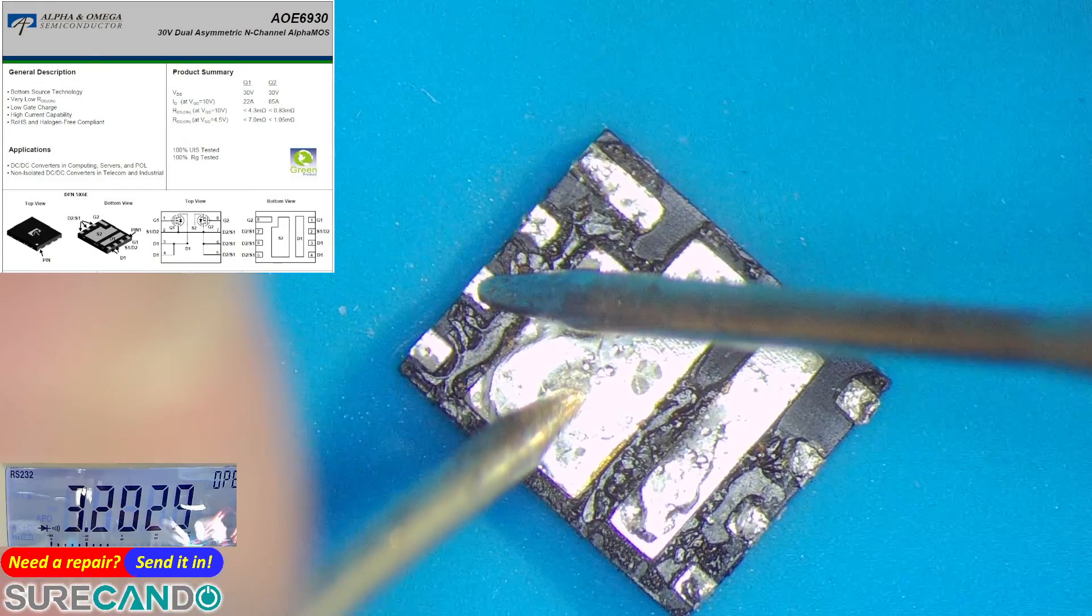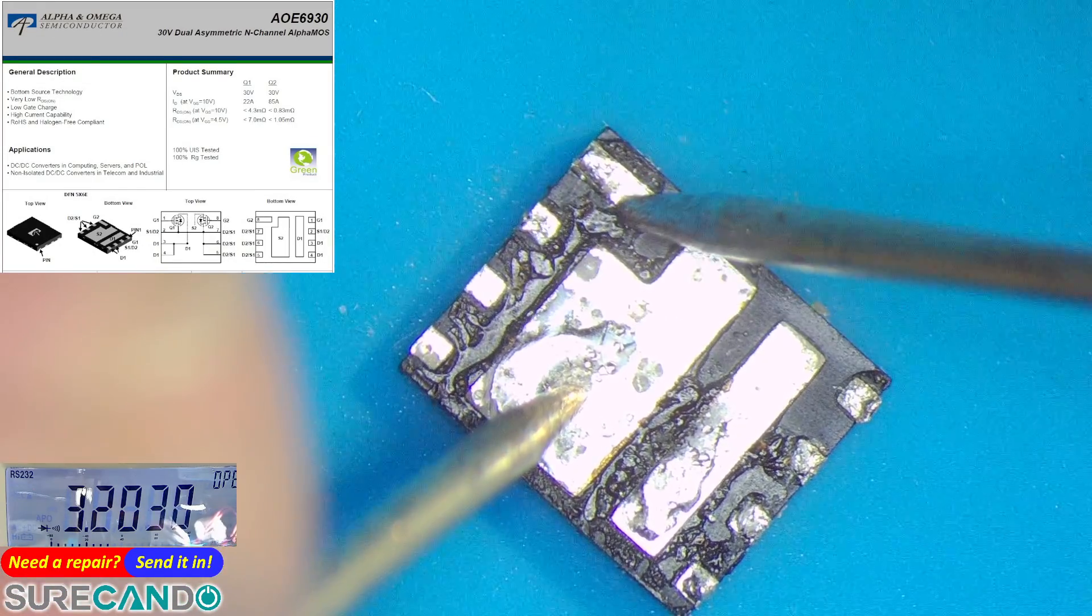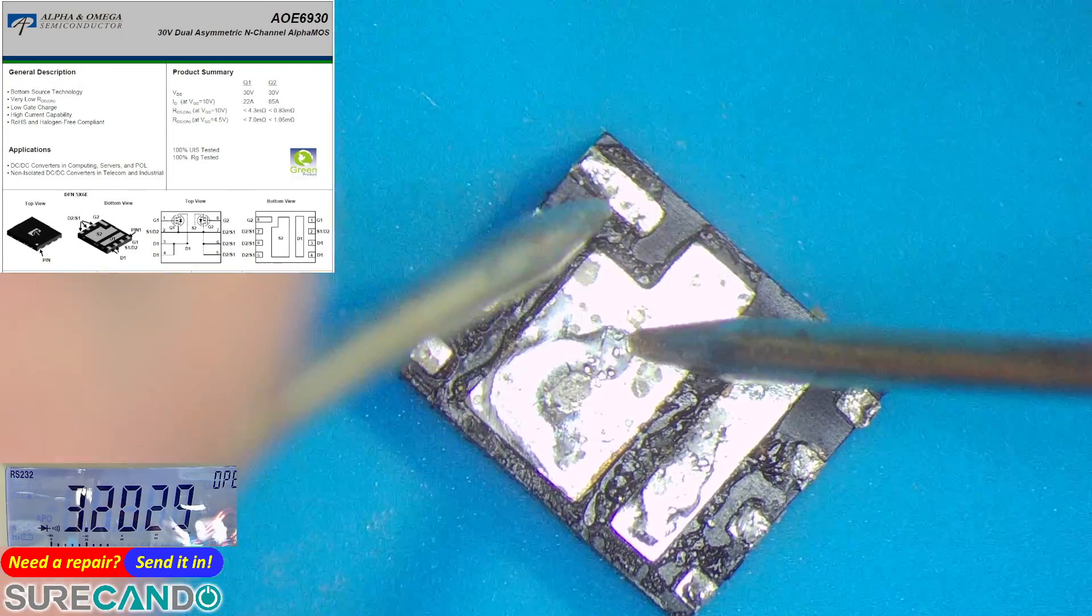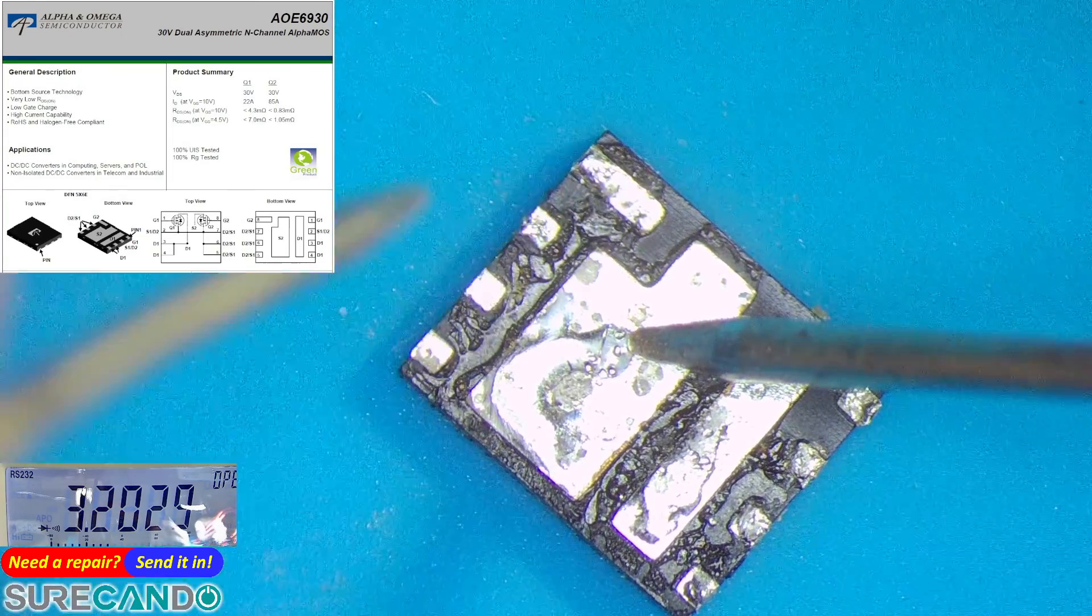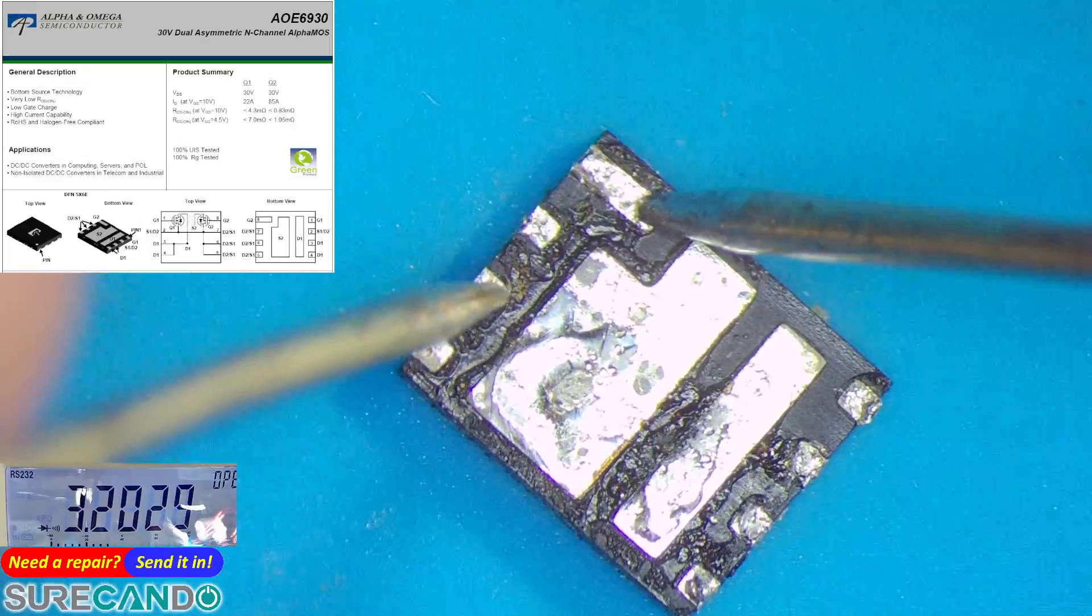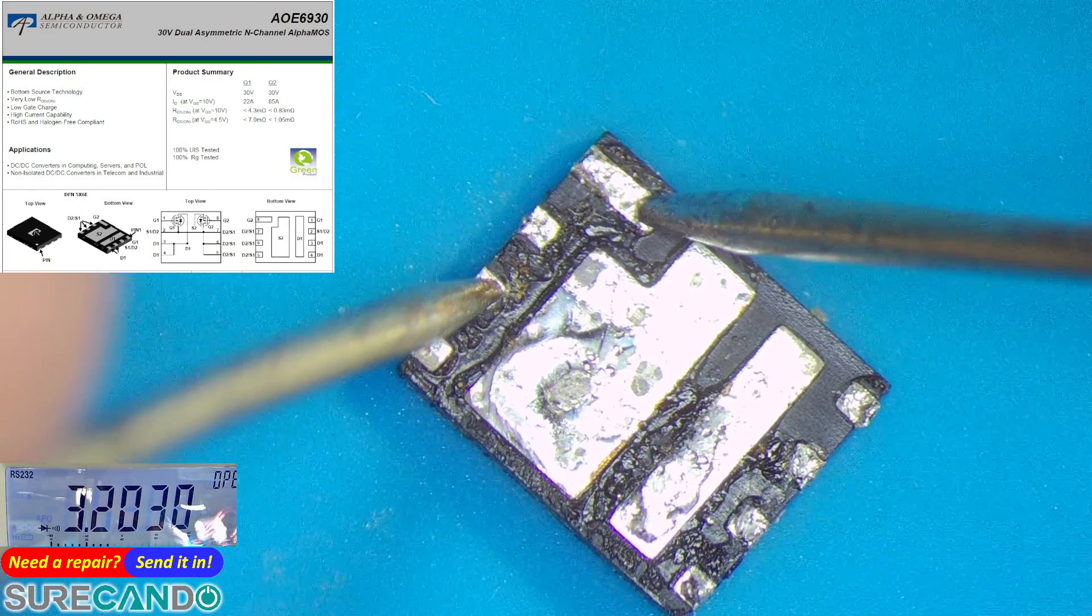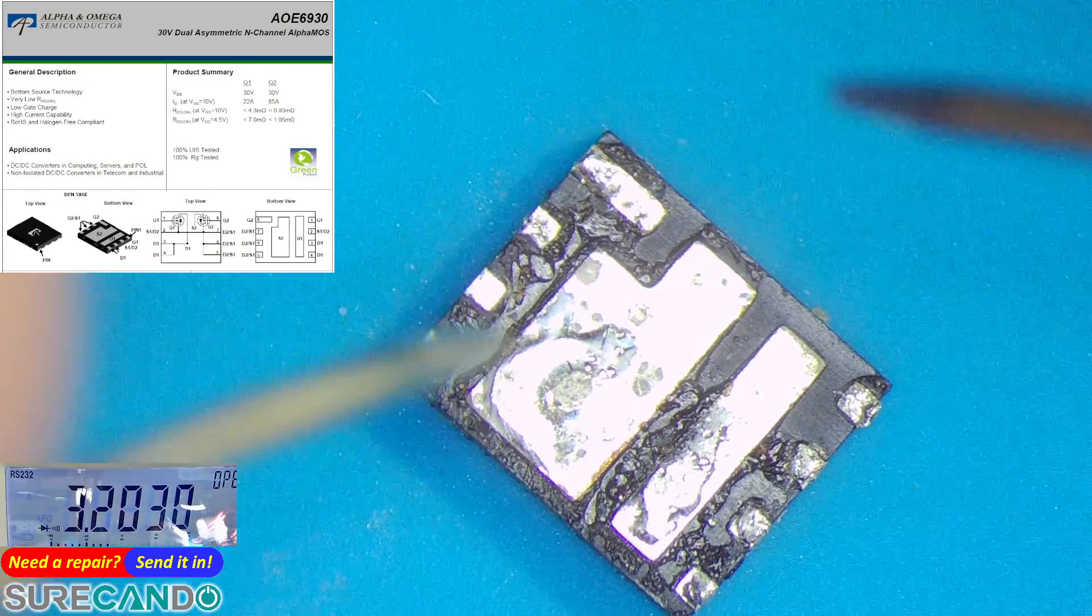Let's test here, no voltage. Good. Now gate, nothing, nothing, nothing, nothing. Great. So that low side MOSFET is good.